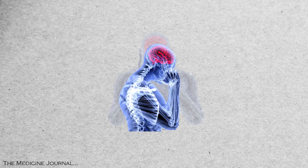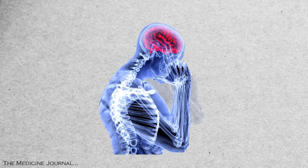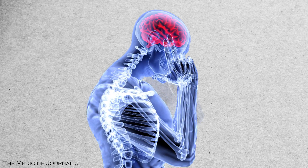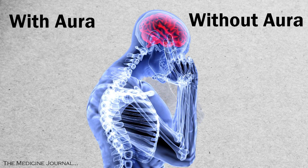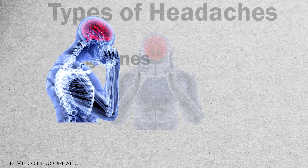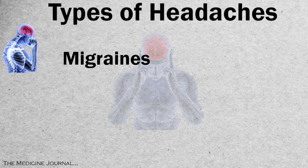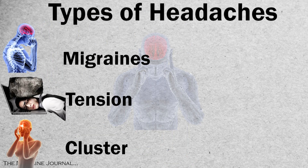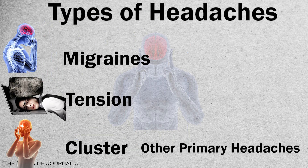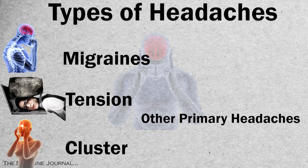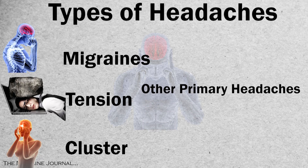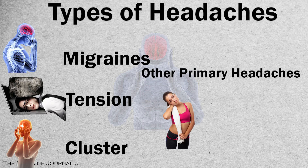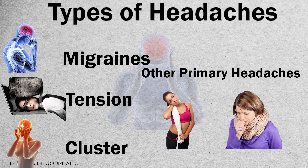Migraines are one of four types of primary headaches, and they come in two forms: those with an aura and those without. The other three primary headaches are tension headaches, cluster headaches, and the not-so-specific 'other primary headaches,' which include things like exercise-induced or cough-induced headaches.